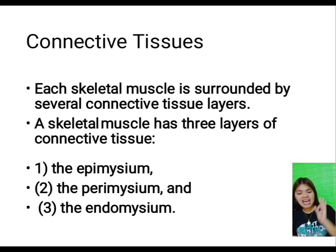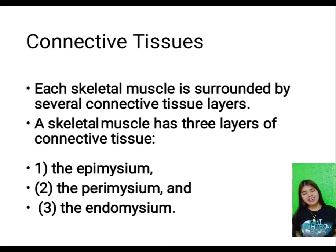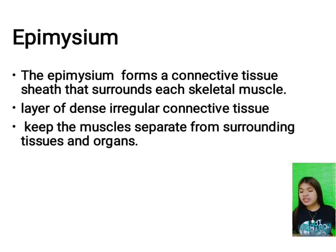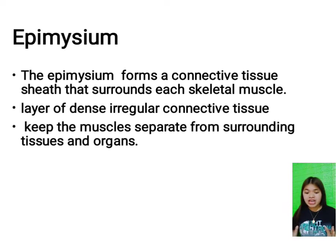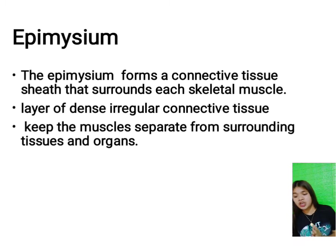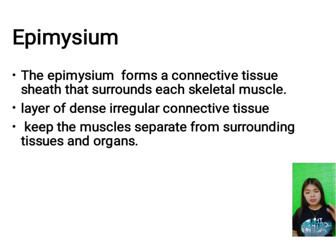The epimysium is a connective tissue sheath that surrounds each skeletal muscle. It is a layer of dense irregular connective tissue whose protein fibers gradually merge with the muscular fascia.